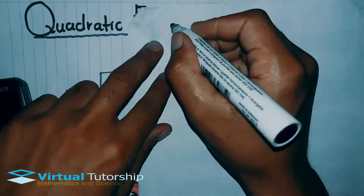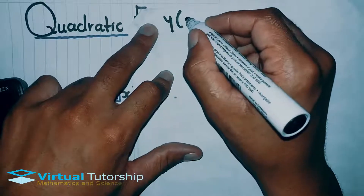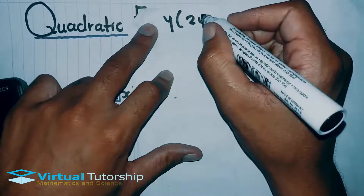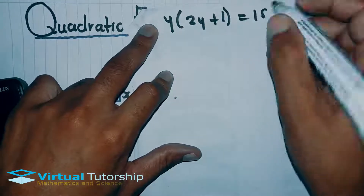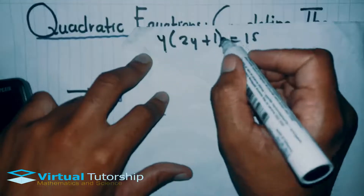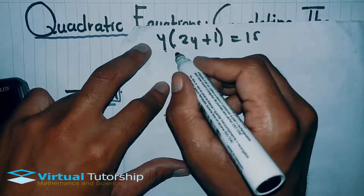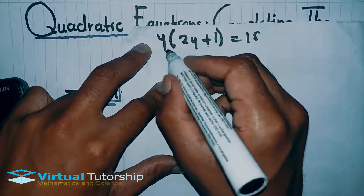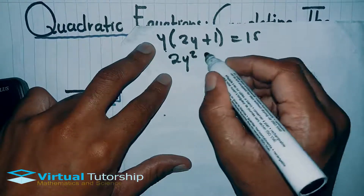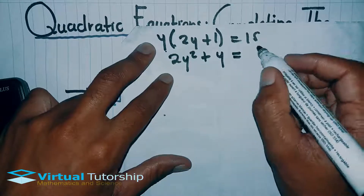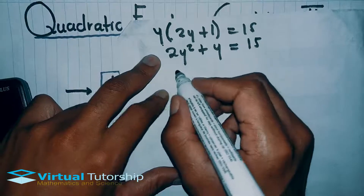Let's take one more example. We have y in brackets: y times (2y plus 1) equals 15. We simplify this by multiplying y into the brackets, giving 2y squared plus y equals 15.